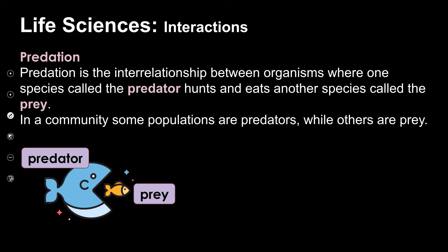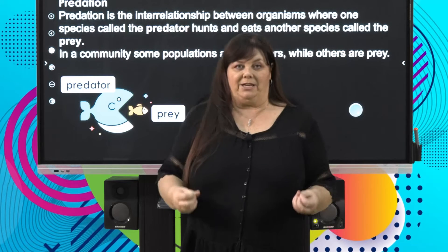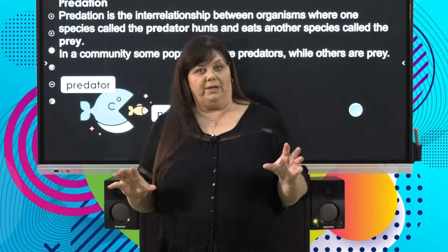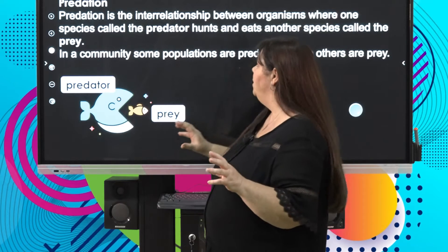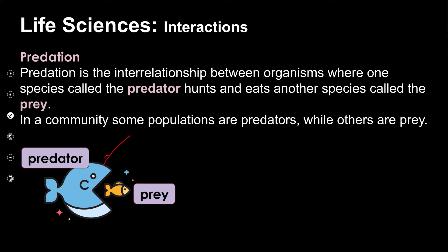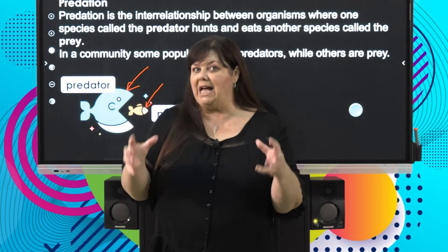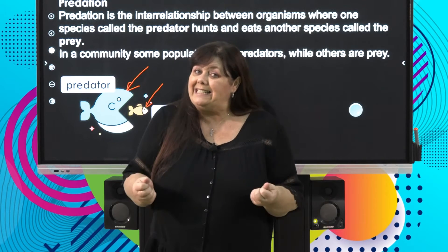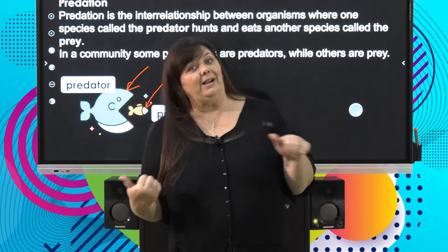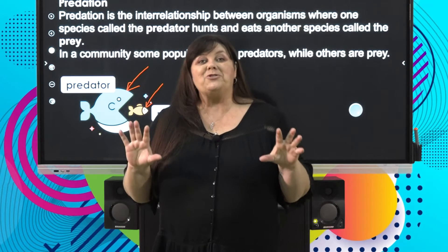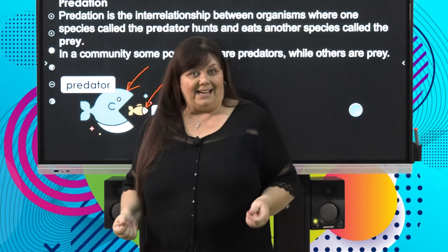This picture sums it up very nicely. In predation, we've got two organisms from different populations. We see a relationship between predators and prey. The predator is the one that does the hunting, catching, and eating. The prey is the population that does the running away, or swimming away — trying to avoid being eaten.